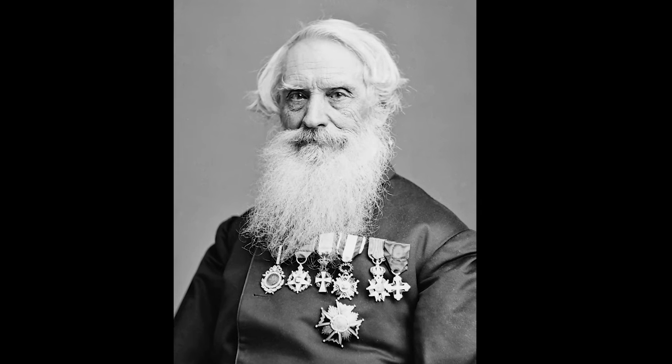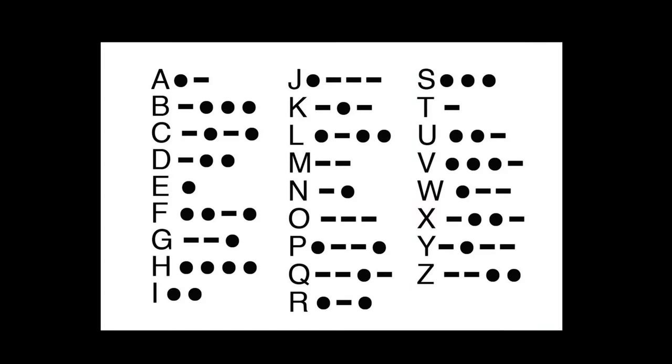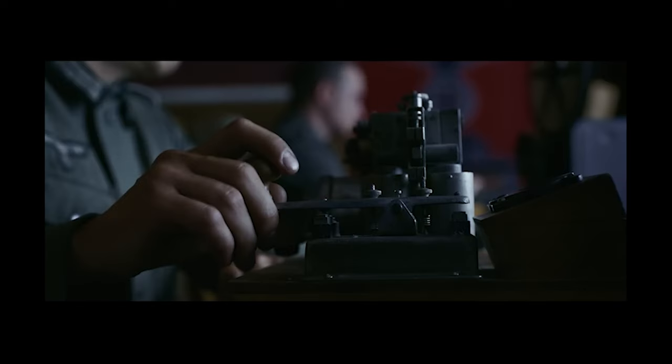One of the first long distance electronic communication systems was Samuel Morse's telegraph. He had an encoding system where each letter of the alphabet and the numbers can be coded as a series of dots and dashes, and this was used for over 100 years.